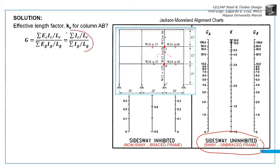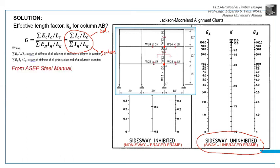The formula for G is this: summation of column I over L and summation of I over L of girders.